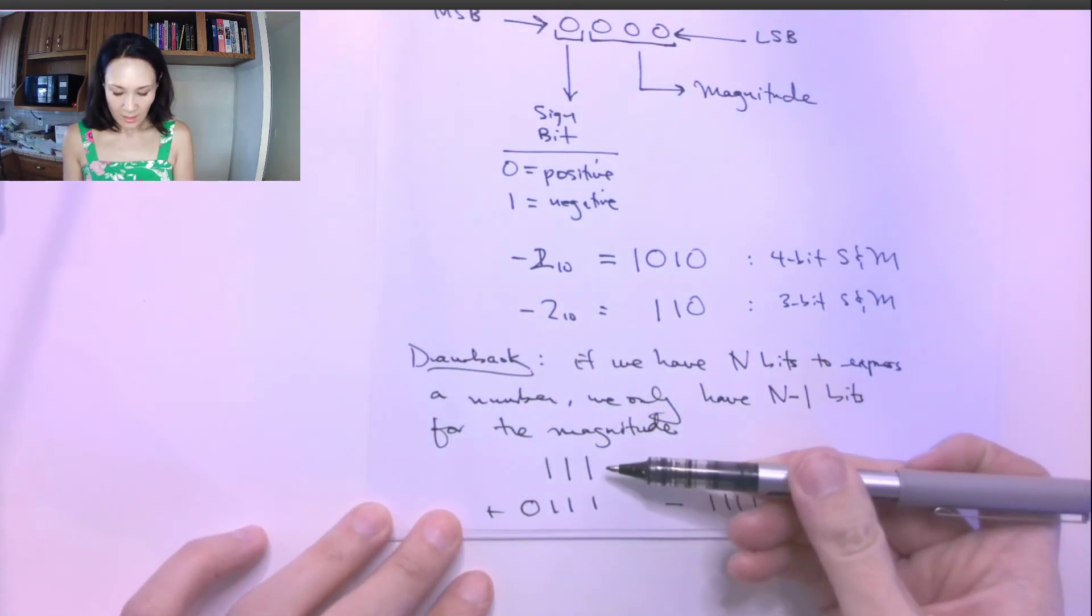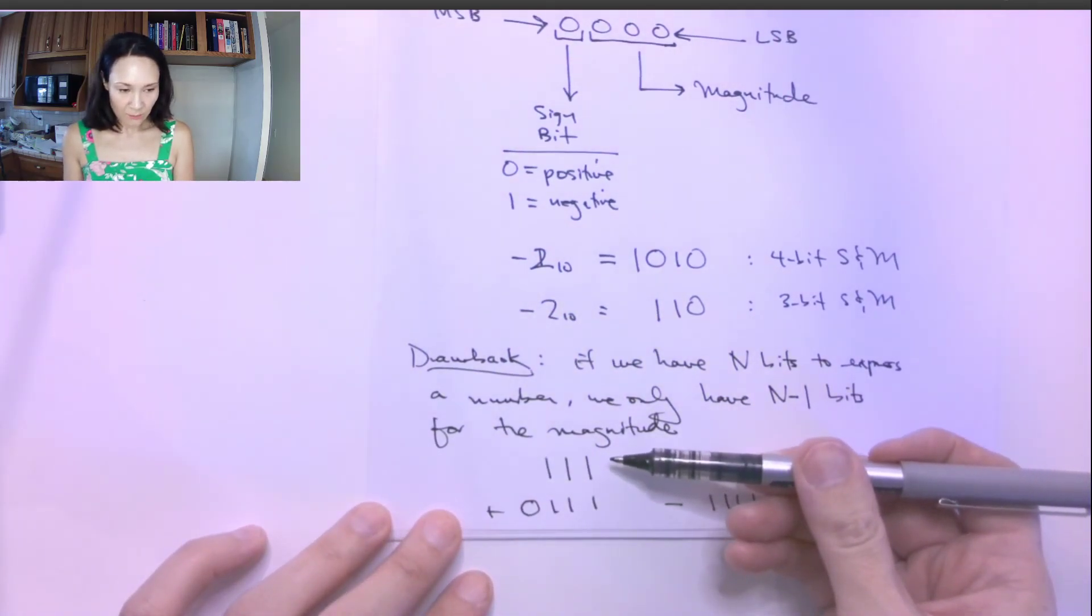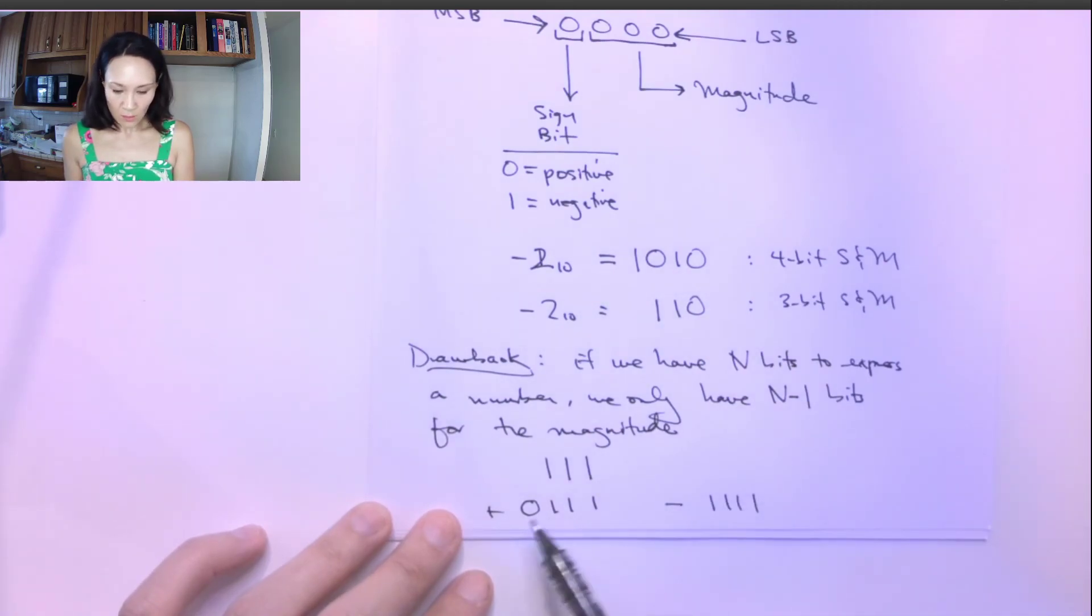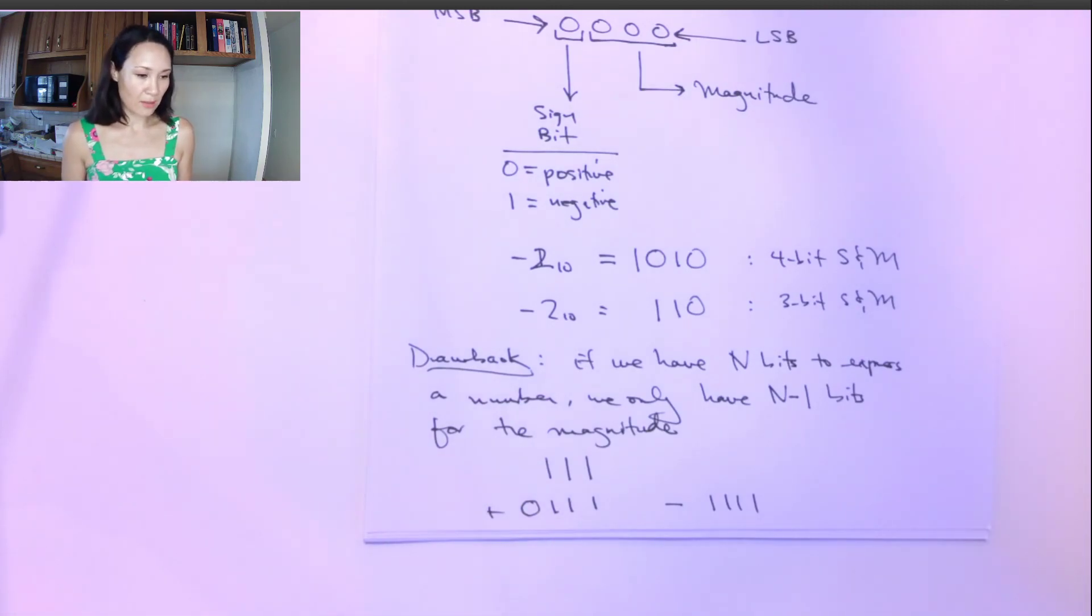So you see what I mean where this is unsigned. In order to denote sign, we need an extra bit. So it requires more storage, which is why actually the sign and magnitude convention is not used as commonly as one and two's complement, which we'll talk about in the next video.